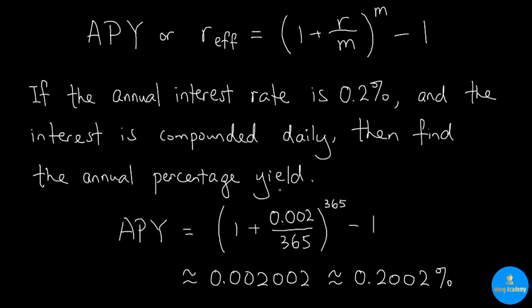then after we plug in 0.002 into r, and 365 into m, we find that the APY is approximately 0.002002.